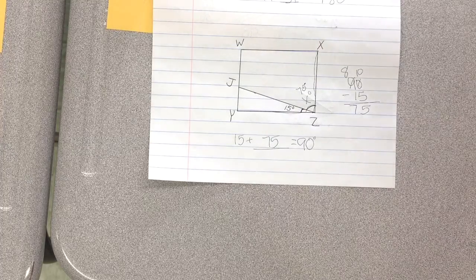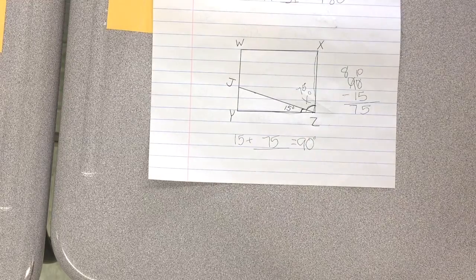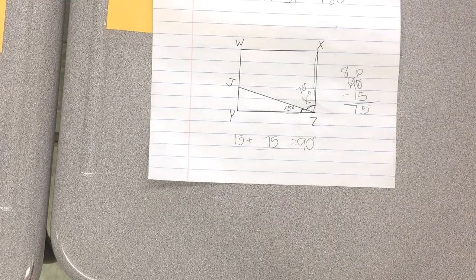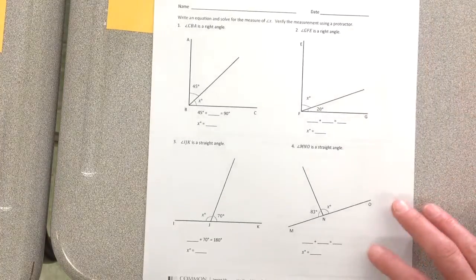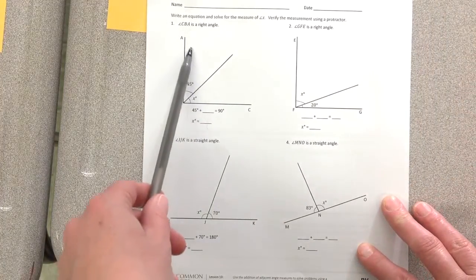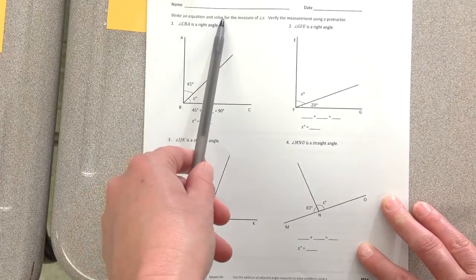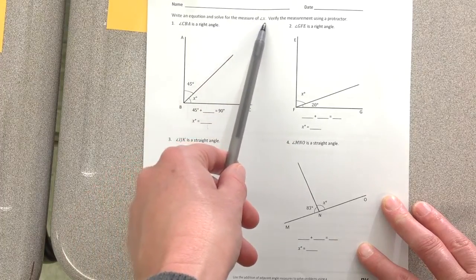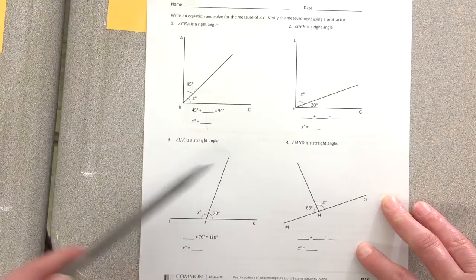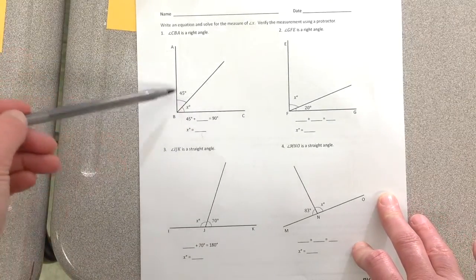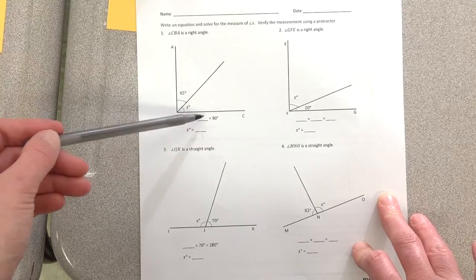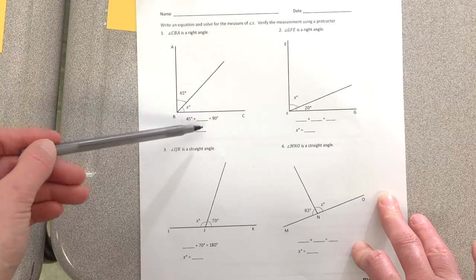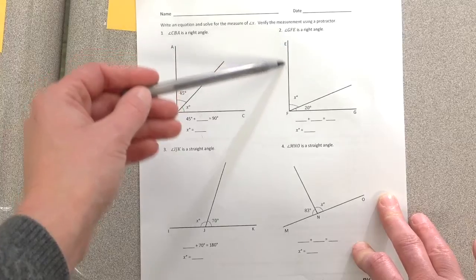When you look on your problem set, you're going to see some things that are very similar. It says write an equation and solve for the measure of angle x. Verify the measurement using a protractor. It's telling you this is a right angle. This piece is 45. This we don't know. So you're just going to fill in the missing angle here and here. Same thing. Right angle.